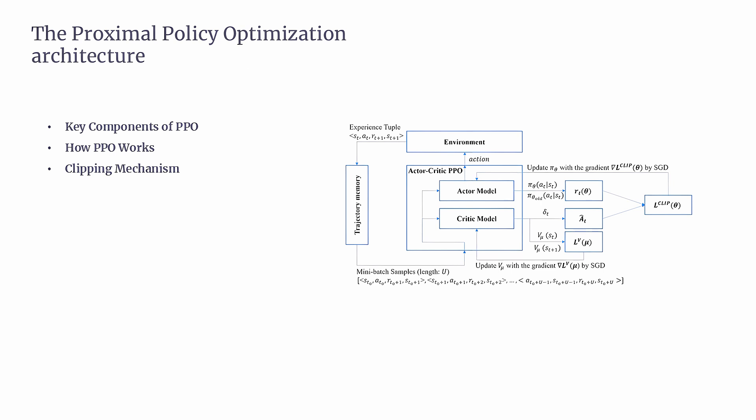The third part: the Clipping Mechanism. One of PPO's key features is its clipping mechanism. When updating the policy, we compare how likely an action is under the new policy versus the old one. This ratio is called RT. If this ratio goes too far outside a safe range, the clipping mechanism steps in, preventing the update from making drastic changes which could destabilize training. The clipped objective function uses AT as the advantage estimate and epsilon as a hyperparameter, usually 0.1 or 0.2. This mechanism ensures updates are conservative, preventing big jumps in the policy.